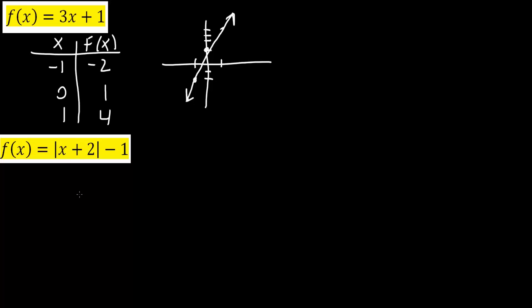Next, we'll do this one. Same idea. We're just going to plug in some points. We have an x and an f of x. If x is, say, negative 4, we would get absolute value of negative 4 plus 2 minus 1. So negative 4 plus 2 would be negative 2, but the absolute value would give us positive 2. 2 minus 1 would give us 1.